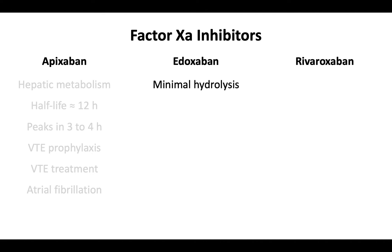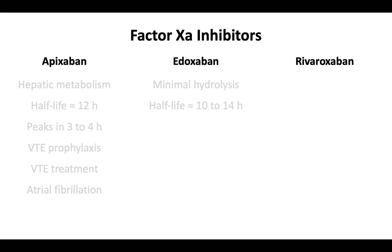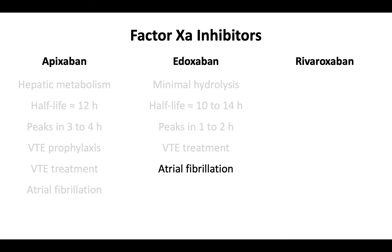Edoxaban undergoes minimal hydrolysis, being excreted in the feces and urine. It has an elimination half-life of about 10 to 14 hours. After administration, it peaks in about 1 to 2 hours. Edoxaban is also indicated in venous thromboembolism treatment and in the management of atrial fibrillation.